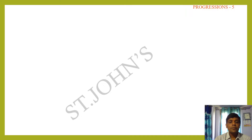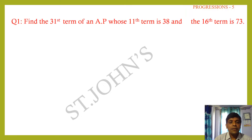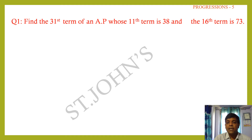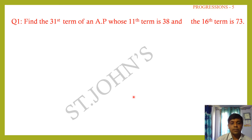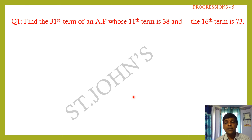Question number one: Find the 31st term of an AP whose 11th term is 38 and the 16th term is 73. We know the general form of AP is a, a+d, a+2d, a+3d, and so on.